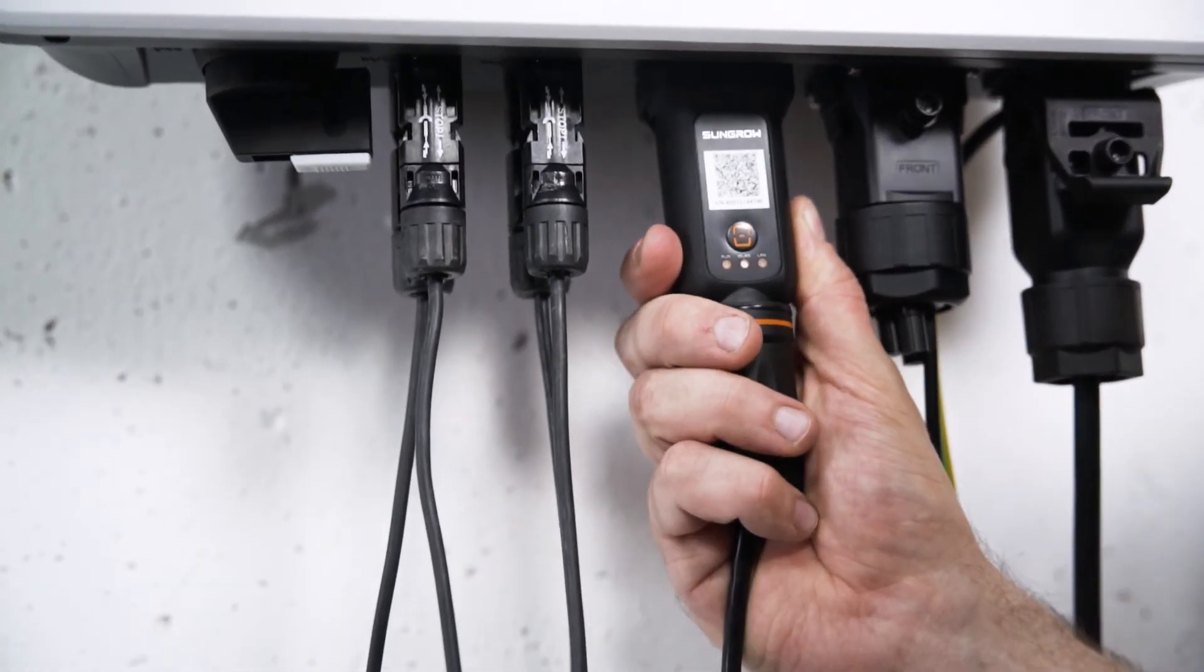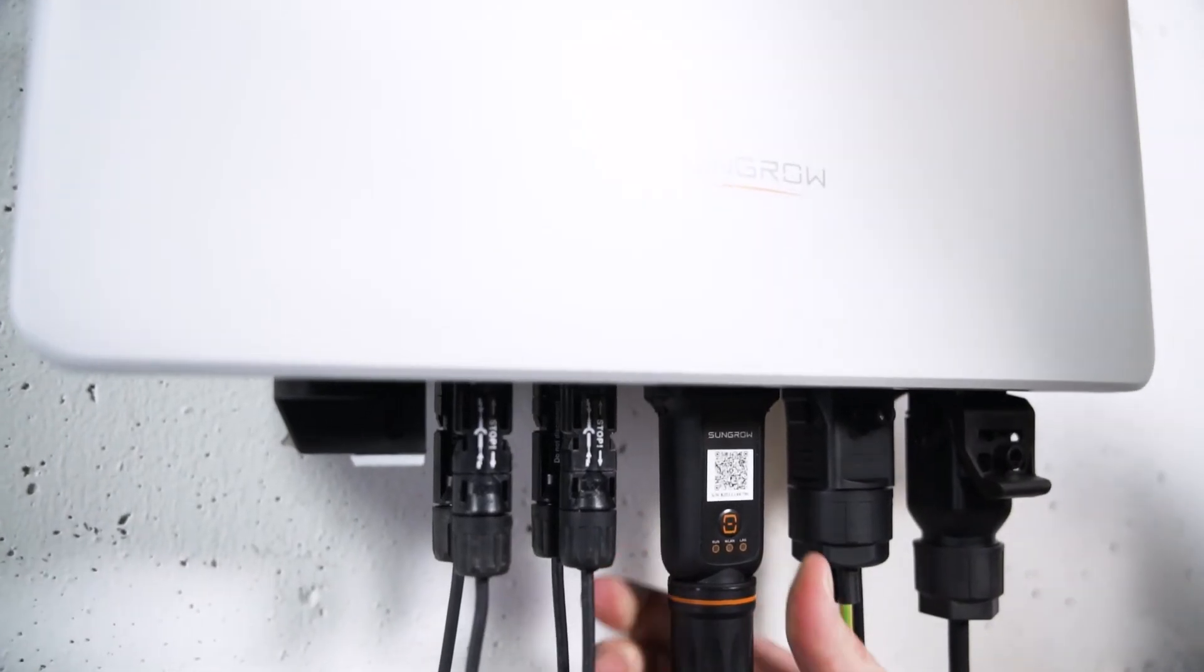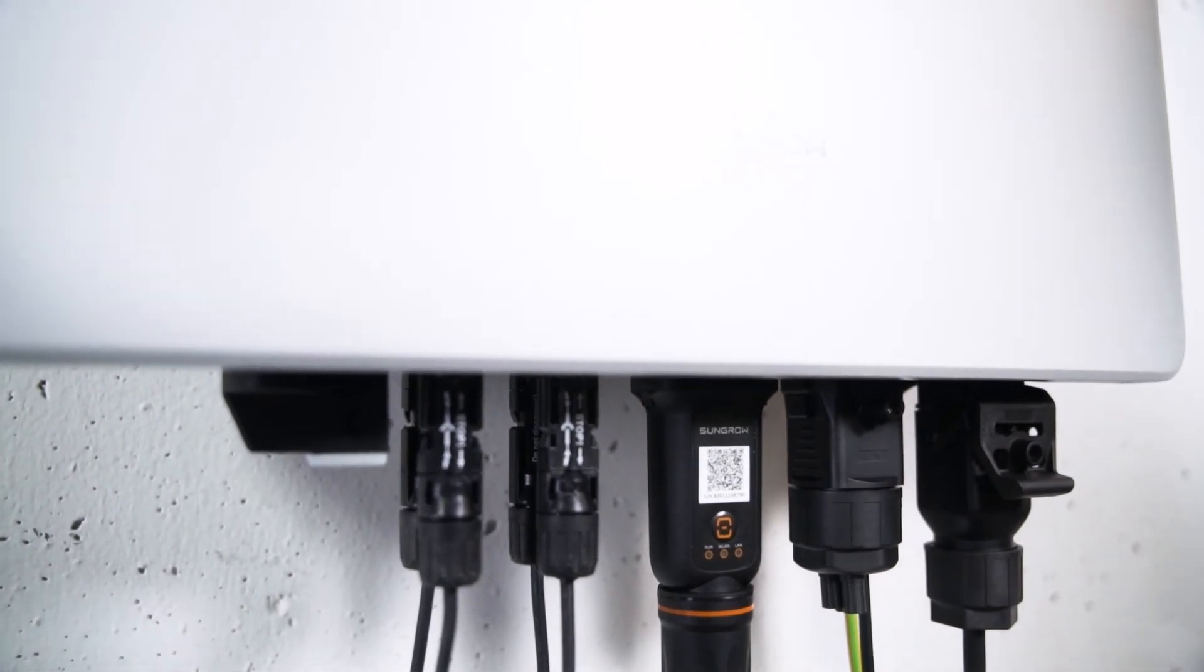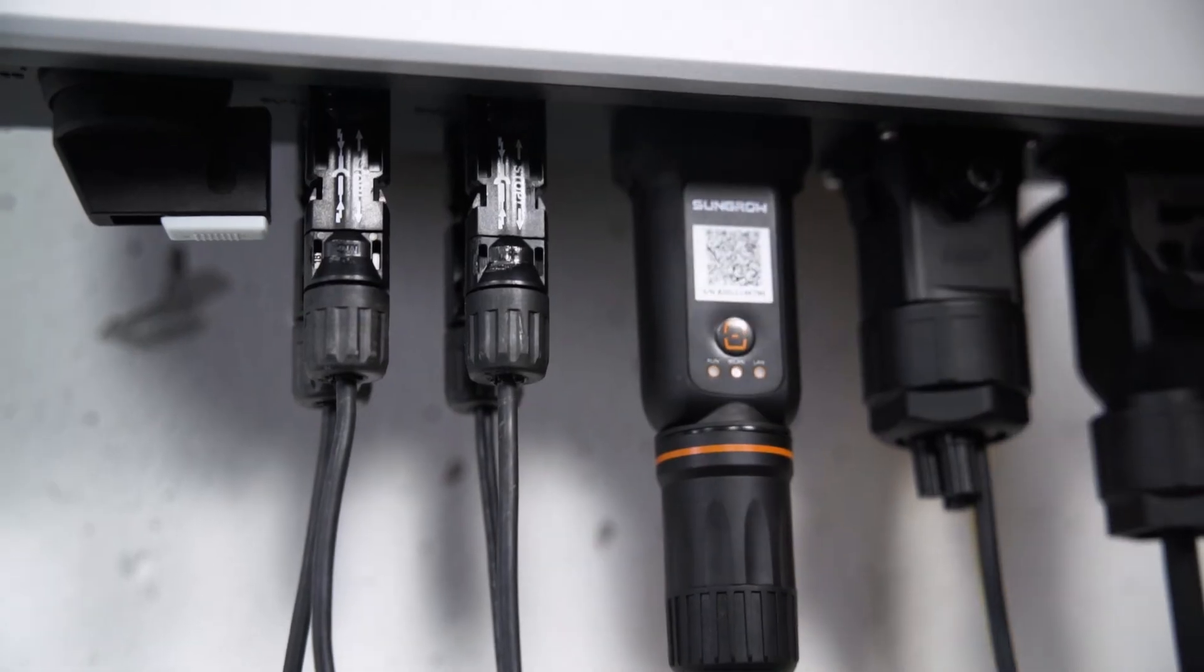Screw everything together and plug the device in. If you want to use Wi-Fi, it's even easier. Simply connect the module to the inverter. That's it. The installation is done.